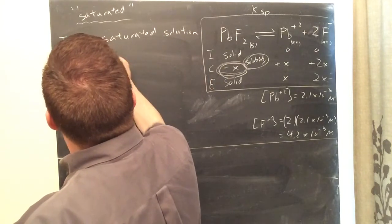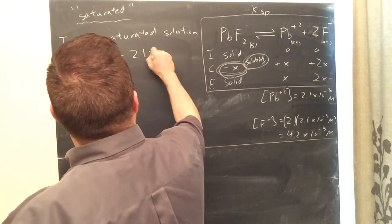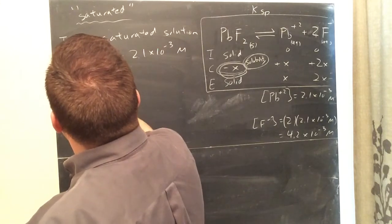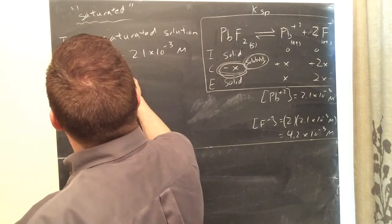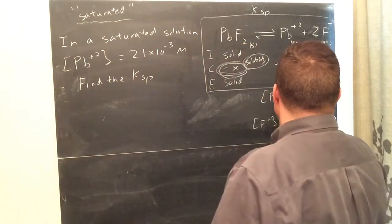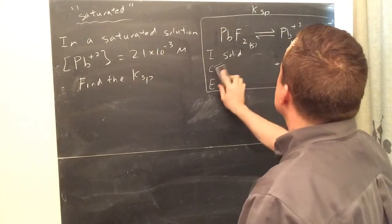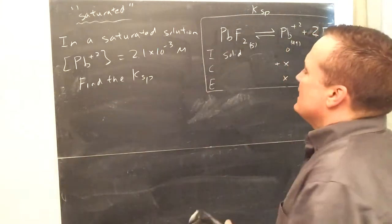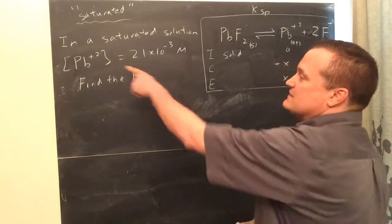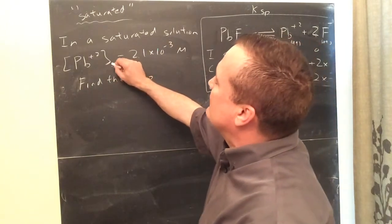so I am making this up right now on the board, in a saturated solution, Pb plus 2 equals, what's the answer there, 2.1 times 10 to the negative 3 molar. Find the KSP. I forgot to even mention this. I didn't really give you an example of this on the gas law, but it can happen in the gases as well. But let me just show you this.